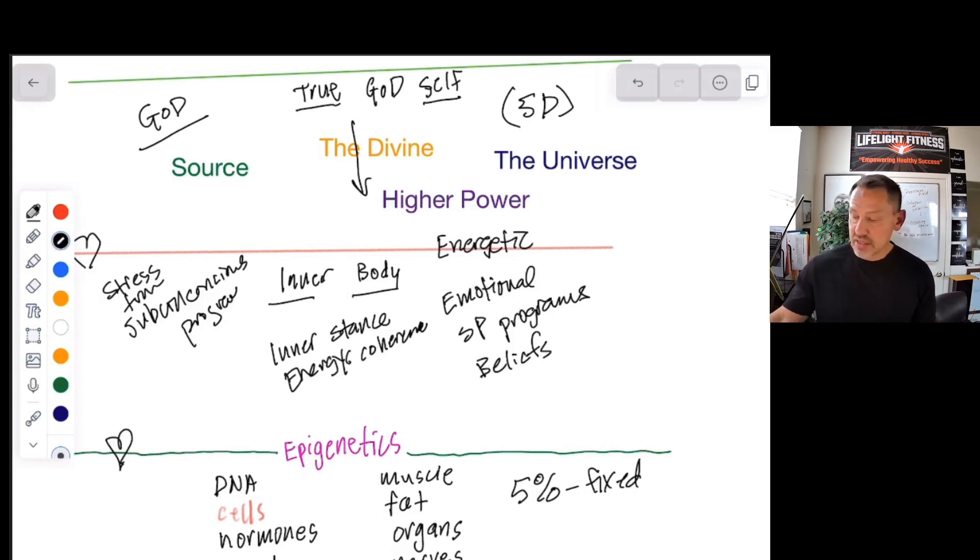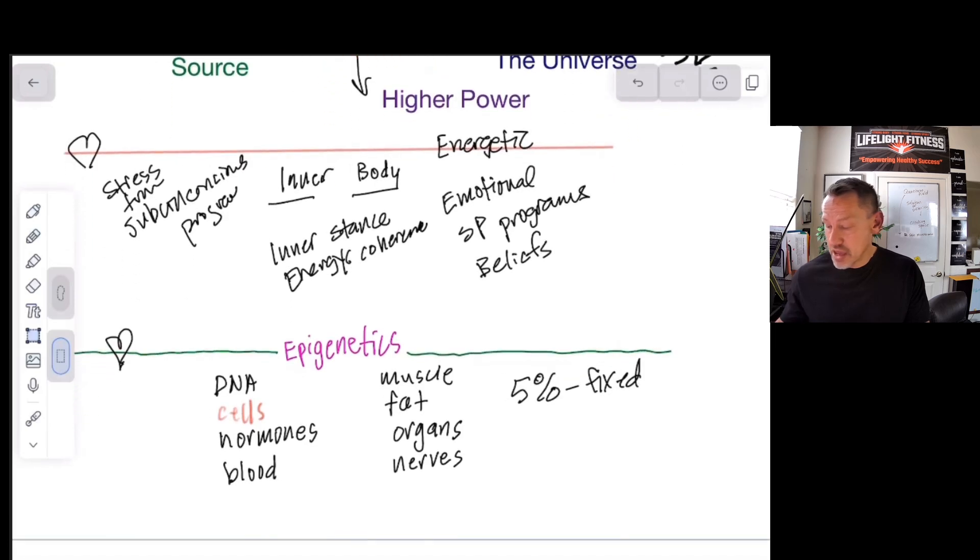Down here is 3D. This is the part that we're all focused on. How our bodies look, how our bodies feel, how much money we have. It's our DNA, it's our cells, it's our hormones, it's our blood, muscle, fat, organs, nerves. When I talk about DNA, 5% fixed. So we're all living in this 3D world in our physical bodies.